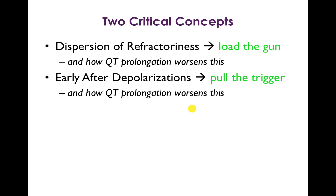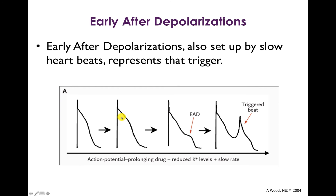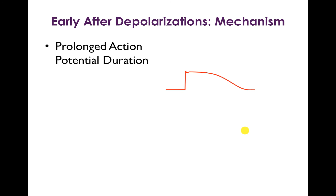So that's dispersion of refractoriness — that's loading the gun. That's making the conditions of a re-entrant tachyarrhythmia possible. Now let's talk again about early after depolarizations and we'll see how this is like pulling the trigger. Recall that early after depolarizations occur during phase 2 or phase 3 of the action potential, and if they are great enough in magnitude, they can reach threshold and give rise to a triggered beat. So again, we have a prolonged action potential duration, a prolonged QT interval.